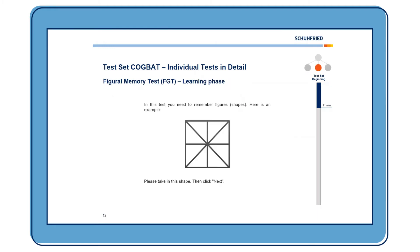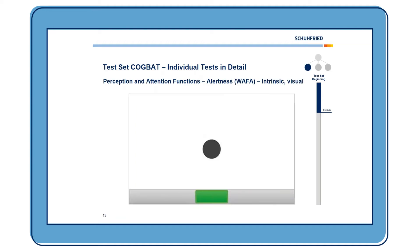The second test in the test set Cockpit is the Figural Memory Test, starting with a learning phase. Different figures or shapes are presented and the task is to remember them as well as possible. After the learning phase of the FGT, there is a test that measures alertness — part of attention — in an intrinsic and visual way. The task is easy to comprehend.